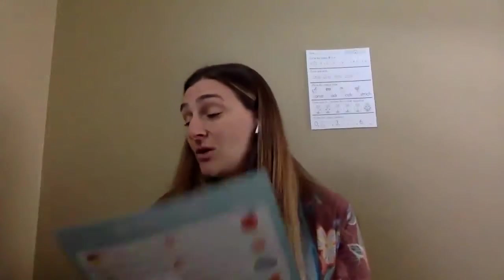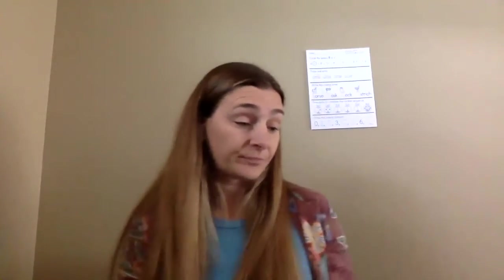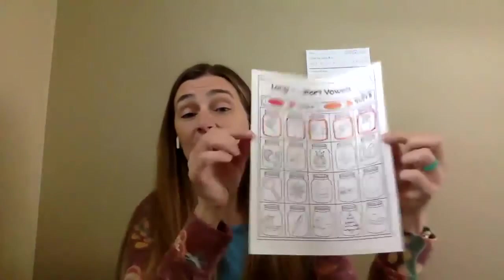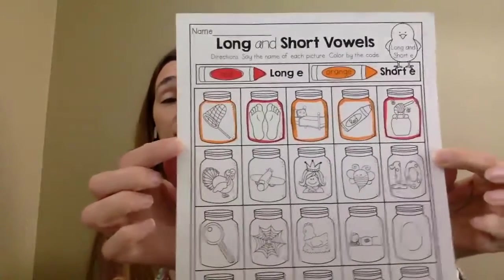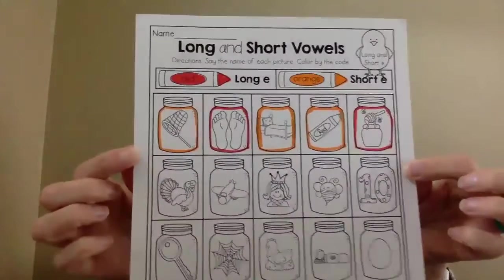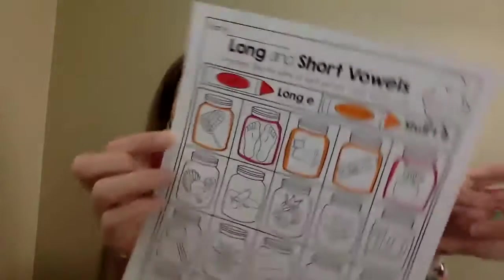So right now we are going to begin this paper together. And it's long and short vowels. You're going to be looking for the one that has the long E and short E. You're going to need a red and an orange. Now remember you can use markers, you can use crayons, you can use colored pencils, whatever tool you have.